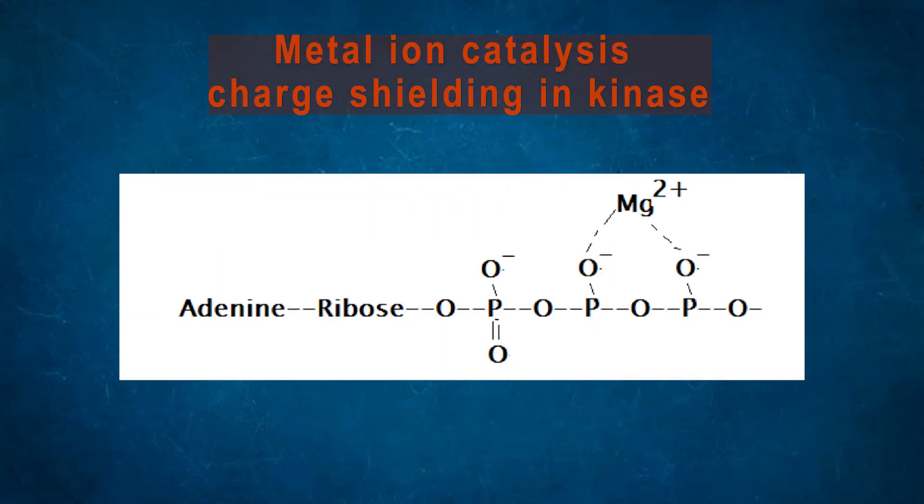Metal-ion catalysis by charge shielding is found in kinases because magnesium shields the negative charge of the phosphate backbone.